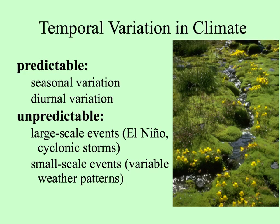This picture shows a mountain stream in the springtime of the Sierra Nevada, fed by snowmelt higher up — one kind of predictable seasonal variation. Diurnal variation could be the drastic differences in temperature between night and day, especially pronounced in dry climates. Unpredictable things are like hurricanes and cyclones, El Niño events, or even variable weather patterns — like here in Miami, where you may have a lot of rain at your house while a couple blocks away your friend doesn't have any.